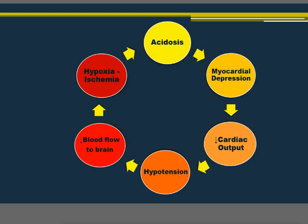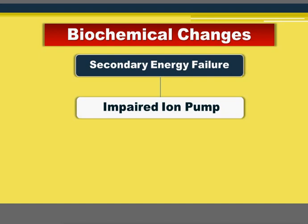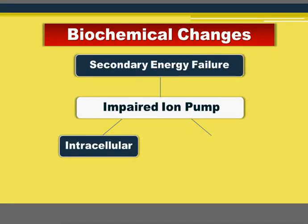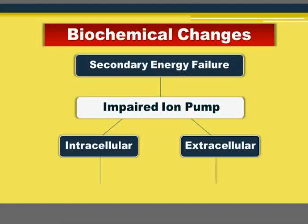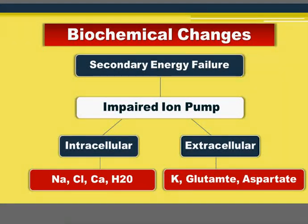If there is no response due to severity of asphyxia or failure of intervention, secondary energy failure occurs. In this state, there is impaired ion pump function, leading on the intracellular side to accumulation of sodium, chloride, calcium, and water — causing severe tissue swelling and edema — and on the extracellular side, liberation of potassium and excitatory amino acids like glutamate and aspartate. This secondary energy failure causes more brain damage and more liberation of free radicals and nitric oxide.